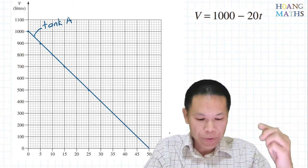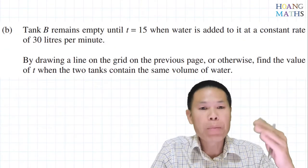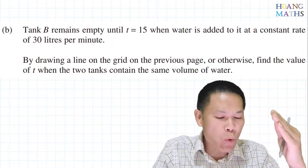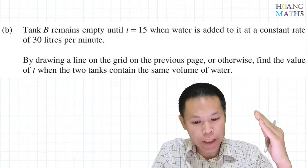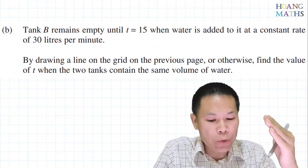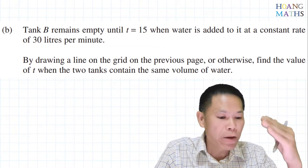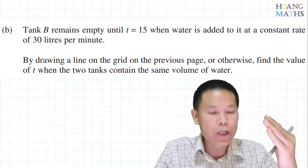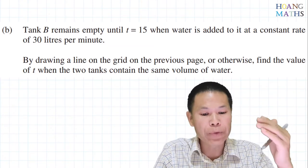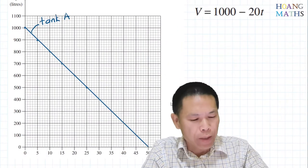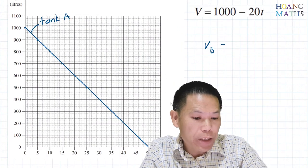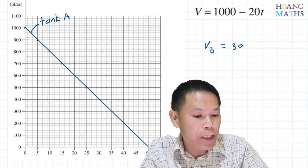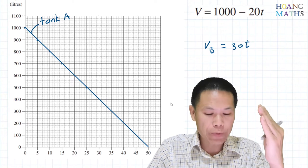Now Part B: Tank B remains empty until t = 15, when water is added at a rate of 30 liters per minute. We need to draw a line on the grid to find the value of t when the two tanks contain the same volume of water. So first we draw the graph for Tank B. The volume of Tank B = 30t.